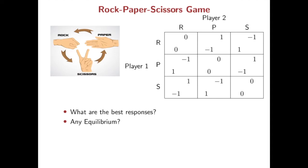Let's start with this Rock-Paper-Scissors game. Winning gives you payoff 1, and losing gives you negative 1, and a tie gives you 0 payoff. Rock-Paper-Scissors is a non-cooperative game, and we want to analyze what would happen in this game.